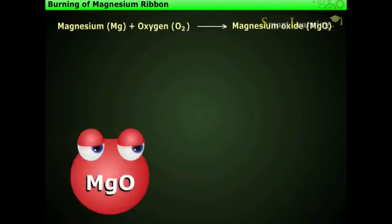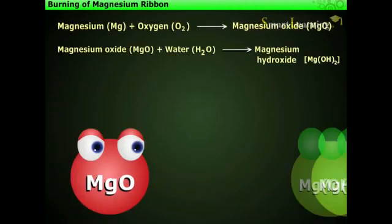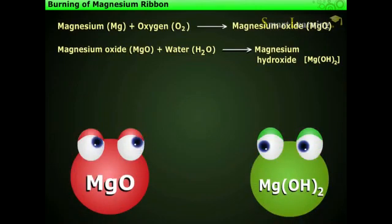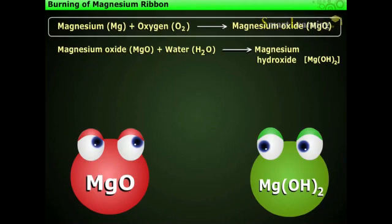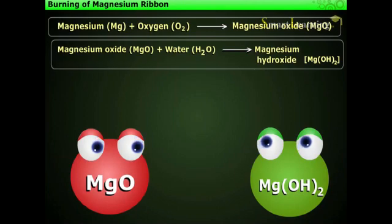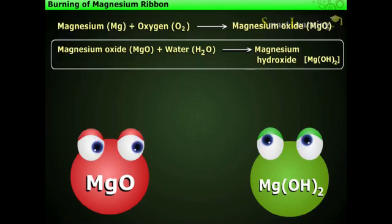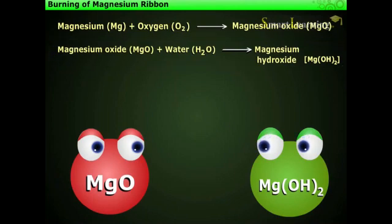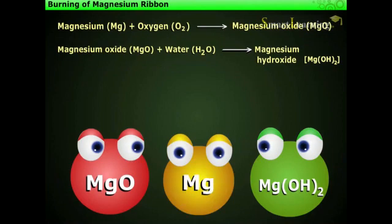During this activity, we get two new substances: magnesium oxide and magnesium hydroxide. Magnesium oxide is formed by burning of magnesium, and magnesium hydroxide is formed by dissolving magnesium oxide in water. The properties of these two substances are different from magnesium.